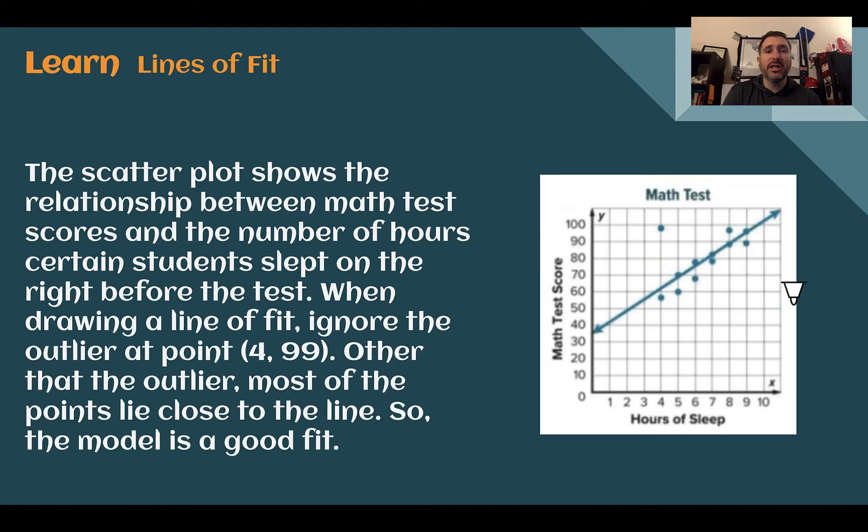Here we have another scatter plot showing the relationship between test scores and the number of hours that someone slept the night before. Here we can see we have our dots. A lot of these follow a pattern except for one over here. If we have an outlier, so at this case four hours of sleep got a score of 99, we could ignore our outlier and make our line of best fit through the rest of the points.